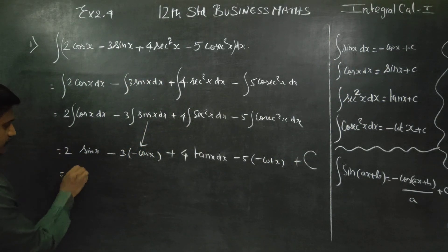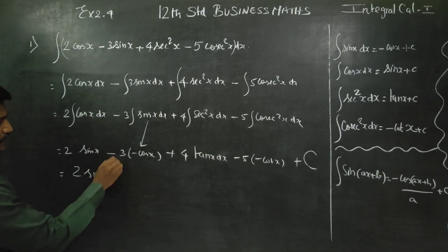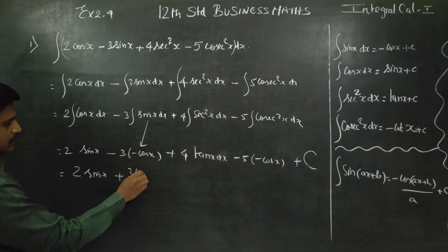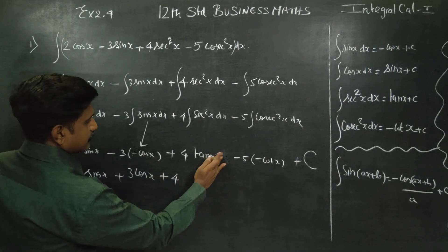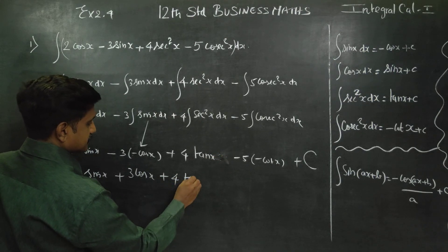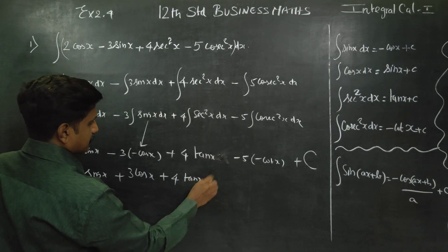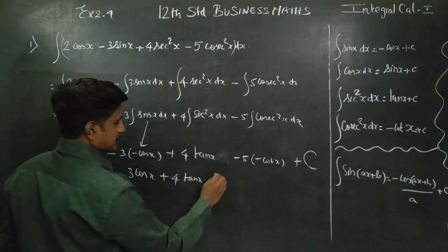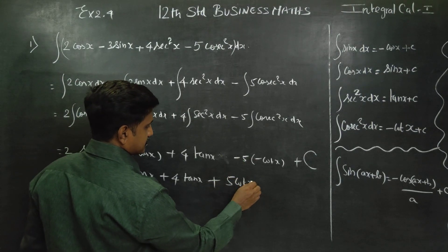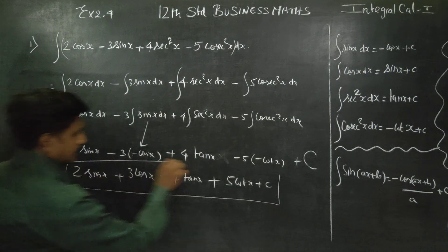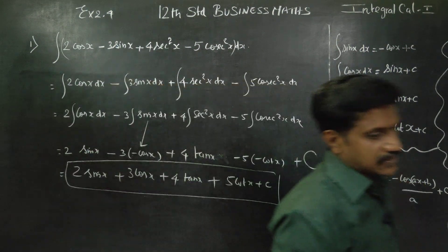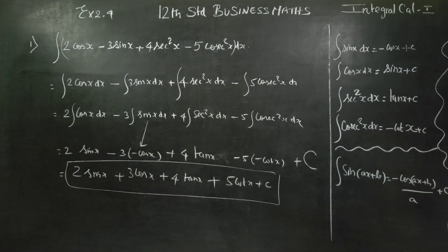Therefore, your answer will be 2 sin x. Minus minus, plus side — 3 cos x plus 4 tan x. Minus into minus, plus 5 cot x. Plus c is your final answer. In the form of the answer, one preliminary base sum. We will try to get the trick. Thank you.